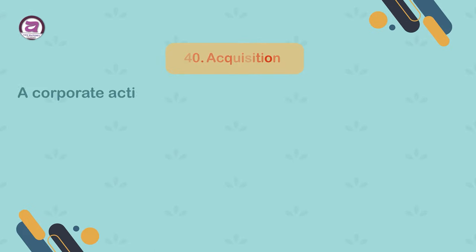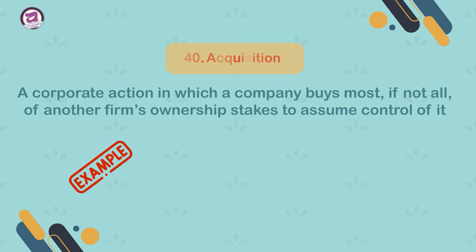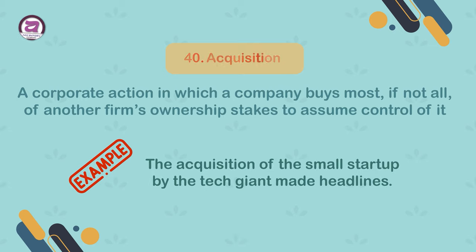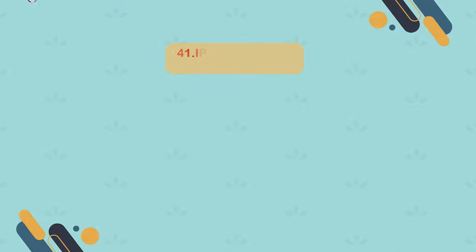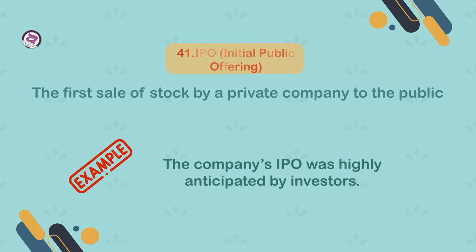40. Acquisition. A corporate action in which a company buys most, if not all, of another firm's ownership stakes to assume control of it. Example: the acquisition of the small startup by the tech giant made headlines. 41. IPO — Initial Public Offering. The first sale of stock by a private company to the public. Example: the company's IPO was highly anticipated by investors.